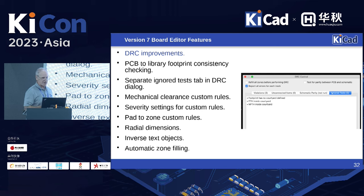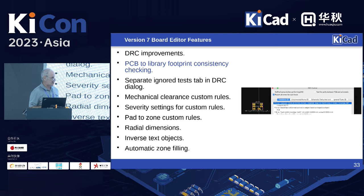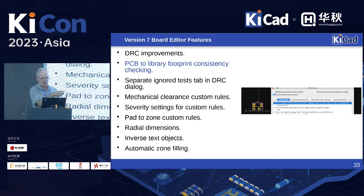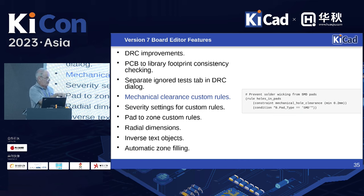Now on to the board editor. There were a bunch of DRC improvements — we added separate tabs so all the DRC issues aren't in the same tab. There's also a new tool to check if a footprint has changed from the library. If you made a change to a library across multiple footprints, it'll tell you there's a change and you can click to update it automatically from the library.